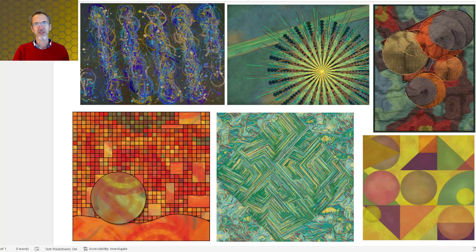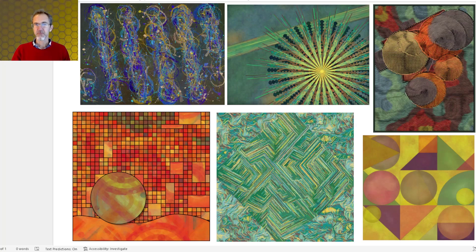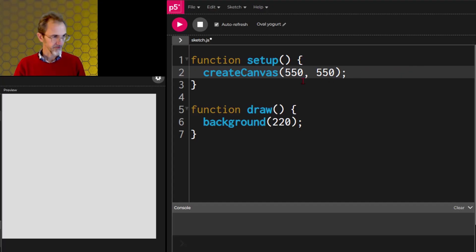Hi, Steve here. This is another video in the series on how to make generative art. In this video, we're going to learn about buffer canvases using the createGraphics function, and we'll also learn about the get function and the image function. A buffer canvas is a canvas in addition to the one we usually see — it's a second invisible canvas.